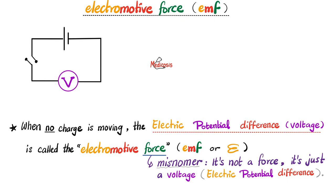What is electromotive force? Well, let's suppose that this circuit is open, so there is no charge moving. Whatever the electric potential difference or the voltage is, is now called electromotive force, abbreviated oomph or with this Greek symbol, which is called epsilon. The electromotive force is not actually a force. It is an electric potential difference. It is a voltage.